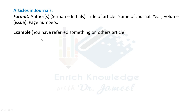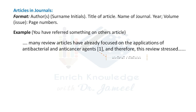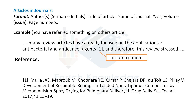Let us see one example. Suppose you derived some material from an article. For example: 'Many review articles have already focused on the applications of antibacterial and anticancer agents.' You can see citation number one in square brackets, and the text continues. This is how we go for in-text citation.